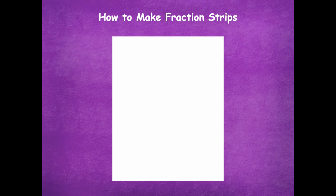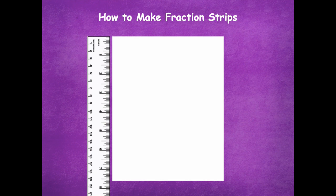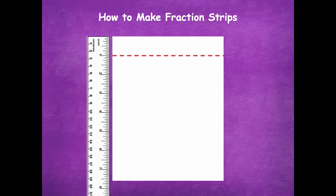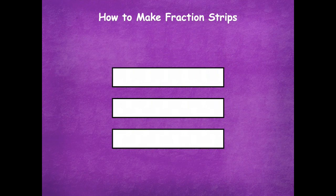So here's how to make our fraction strips. You're just going to take a regular sheet of paper that's eight and a half inches. You're going to measure one inch straight across, draw one line, then grab your scissors, cut straight across, and do that three times and you will have three fraction strips just like this. So it's the whole width of the paper, across the way, which makes it easier to cut those fraction strips.